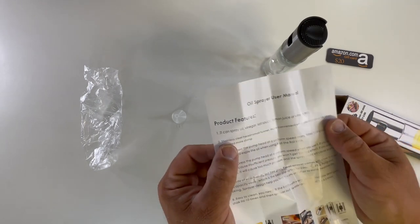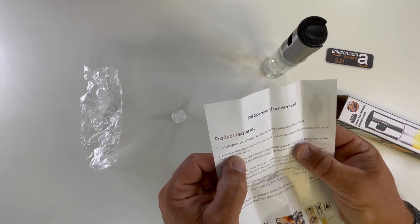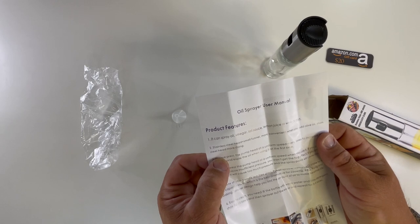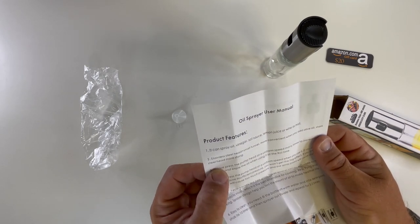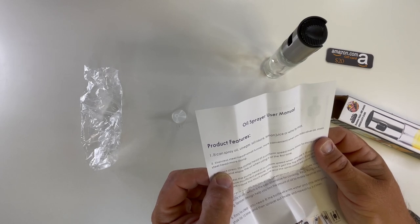Someone said it doesn't mist very good. I don't know. I mean, you have to pay for it in life. So, the oil sprayer user manual. It can spray oil, vinegar, hot sauce, lemon juice, or wine as a mist. The stainless steel head plus small funnel. More convenient when you add olive oil.